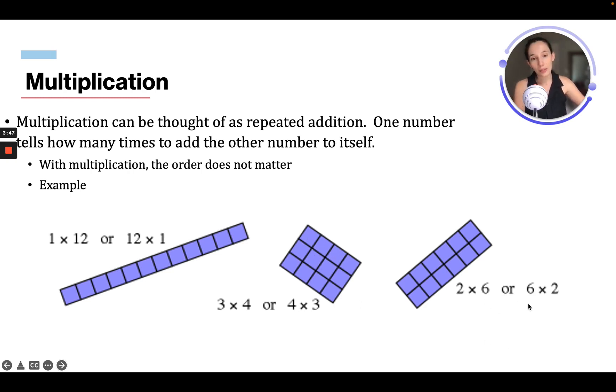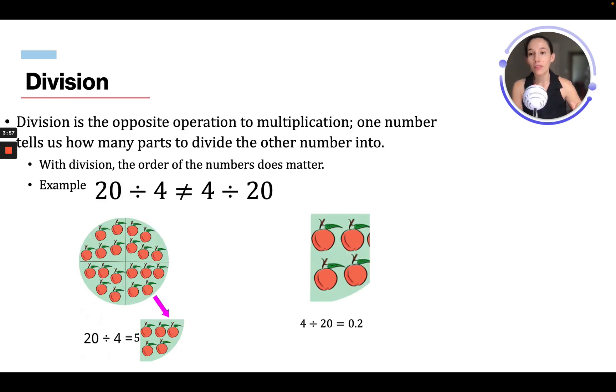And then 2 times 6, or 6 times 2, we have 6 going this way, we have 2 going this way, and that's gonna give us 12. So we're gonna have 12 blocks here. Then we have division.